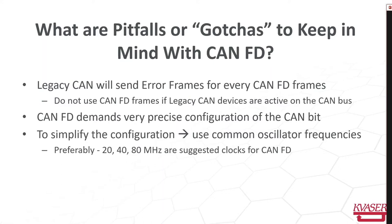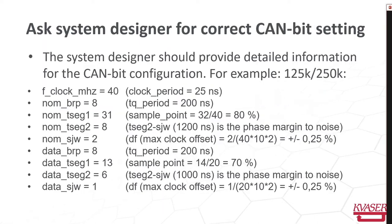The second problem with CAN FD is the very precise configuration of the CAN bits — typically the sample point and nominal bits must be set very correctly. To simplify this configuration, you should use a common oscillator frequency in all connected modules. CAN FD suggests supporting 20, 40, or 80 megahertz clocks so you can always get the same bit settings in all nodes. Before you connect to the CAN bus, ask the system designer for the correct bit settings. There are nine parameters that must be understood and set correctly to match the communication system.